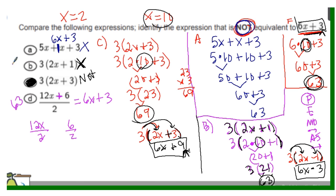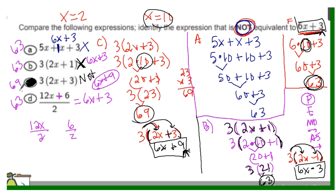In summary, when x equals 10, options A, B, and D all equal 63, so they are equivalent to the original. Option C equals 69. Applying the distributive property and combining like terms, options A, B, and D all simplify to 6 times x plus 3, while option C simplifies to 6 times x plus 9. Using both methods, we confirm that option C is not equivalent.